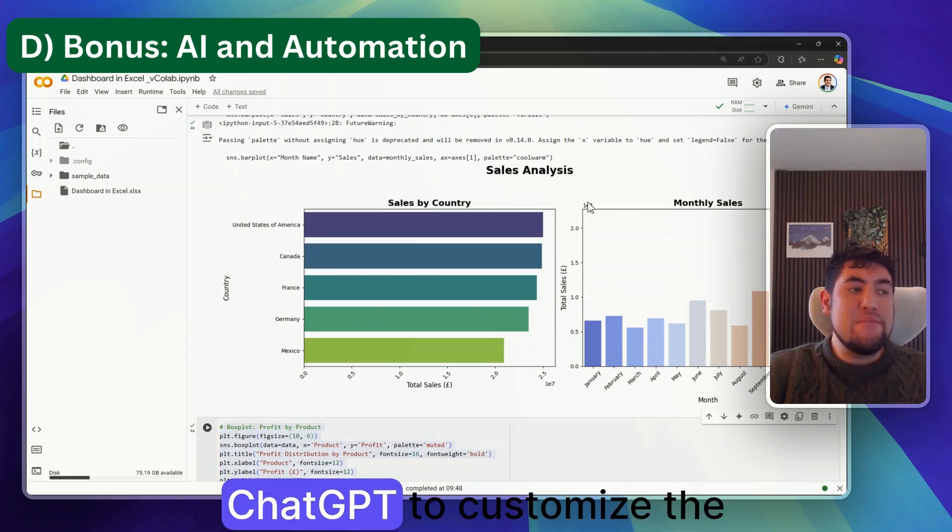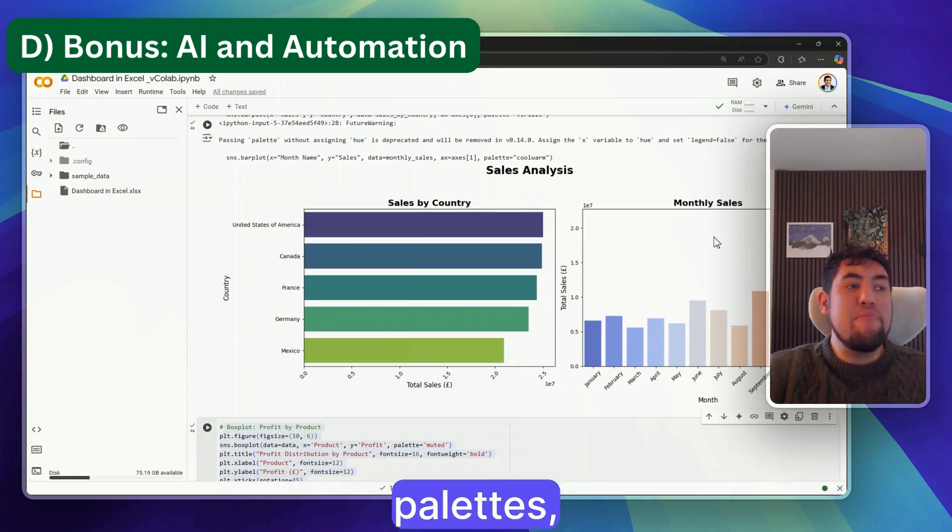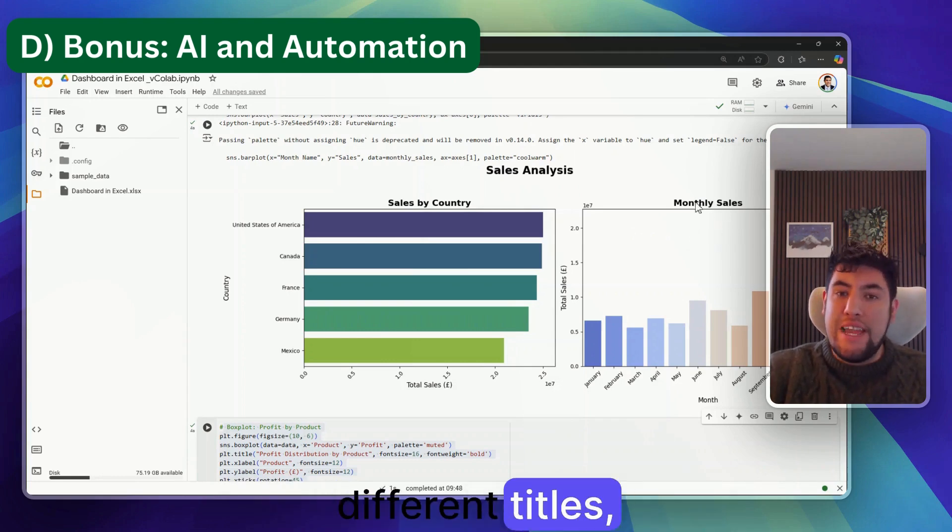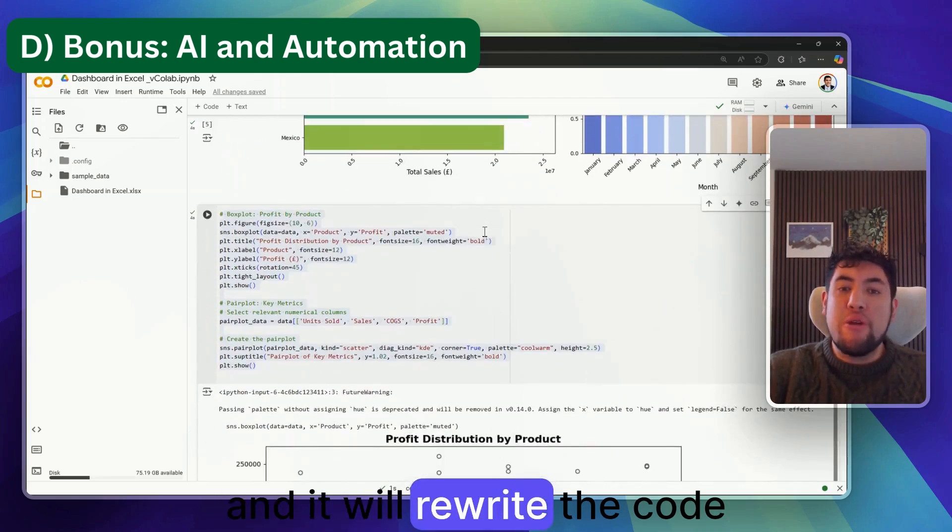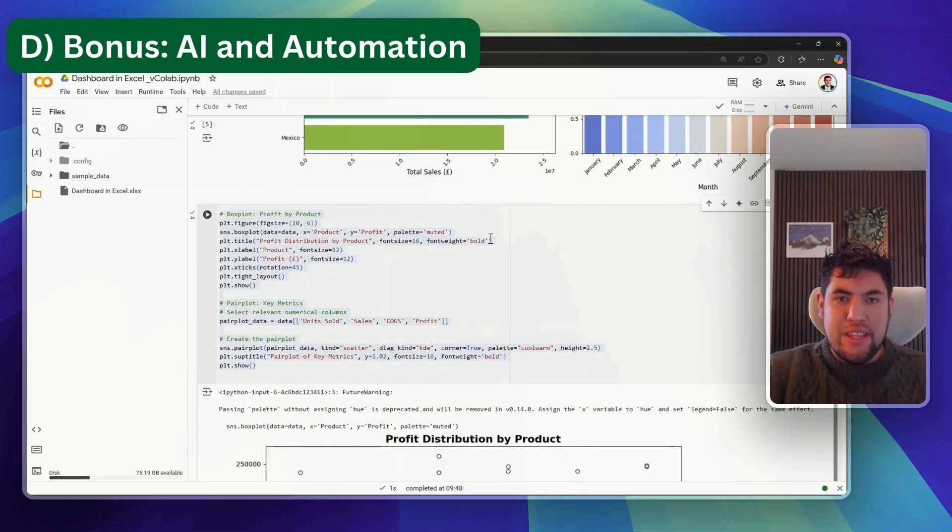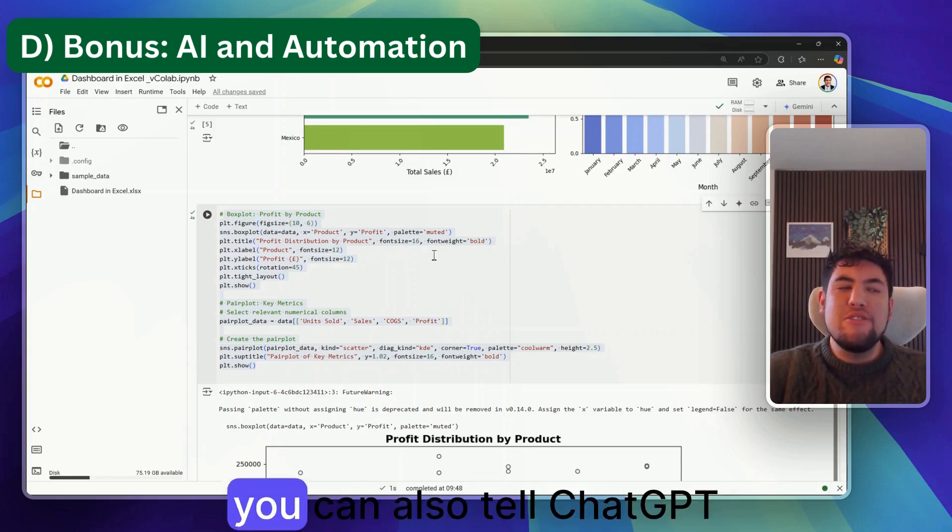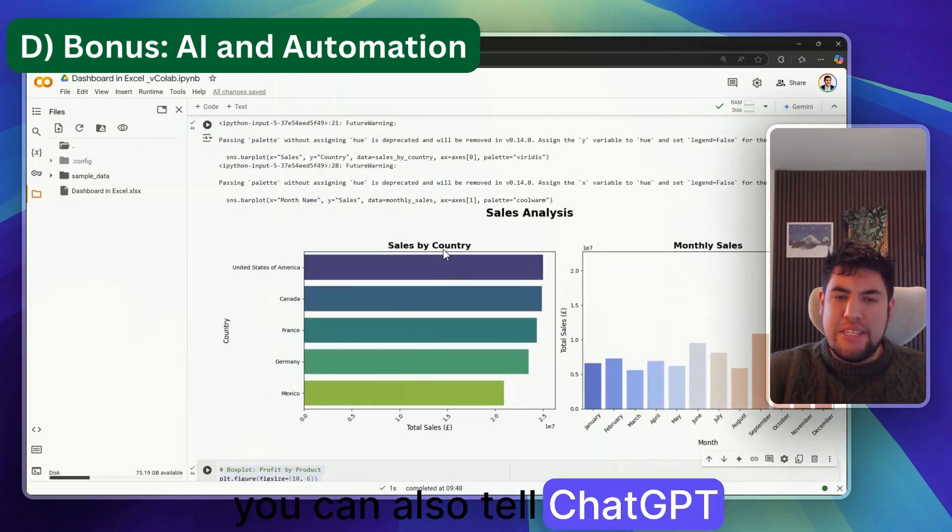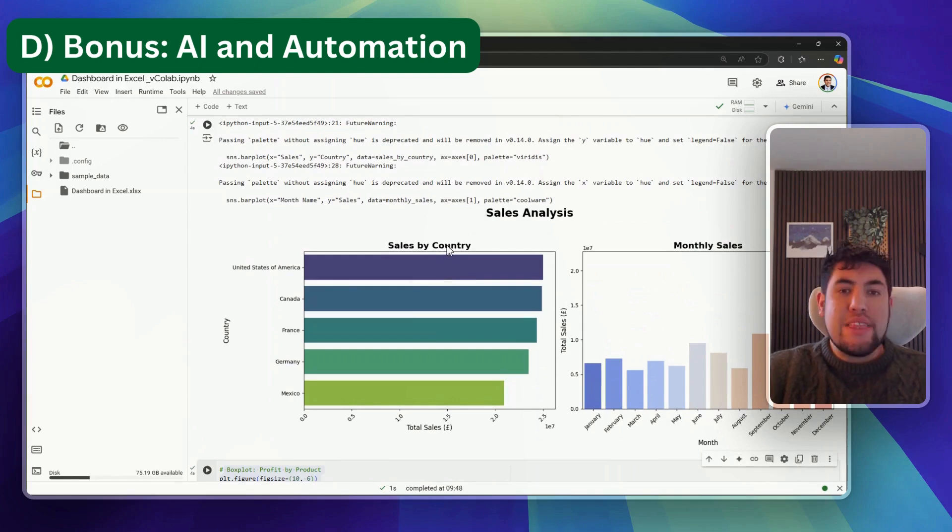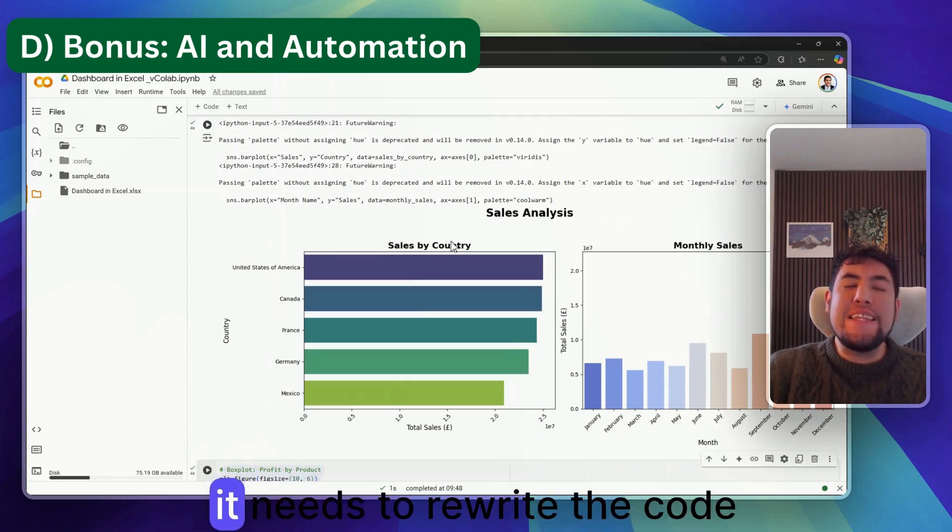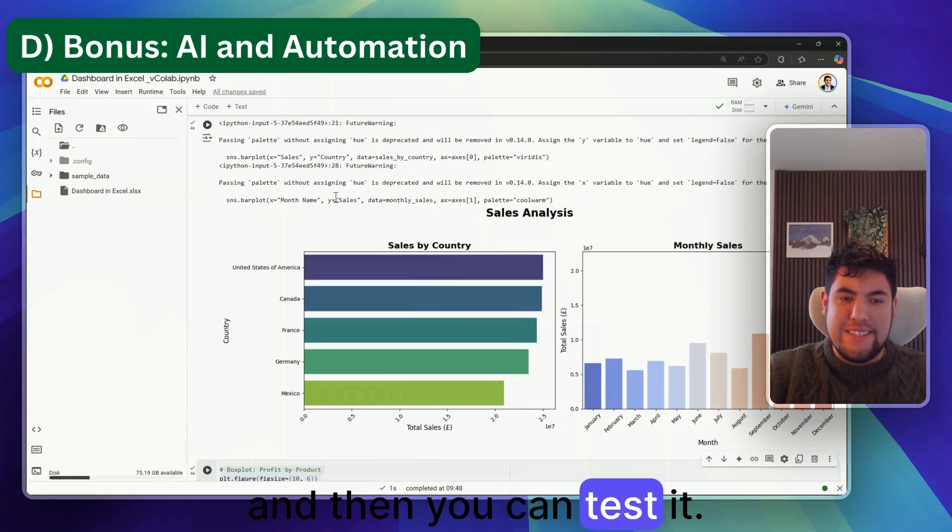What I told you about customization of the different graphs, I will show you in the other video, but you could also tell ChatGPT to customize the graphs based on different palettes, different colors, different titles, and it will rewrite the code for you. And finally, what if you have an error? Well you can also tell ChatGPT that you had an error and that it needs to rewrite the code, and then you can test it.